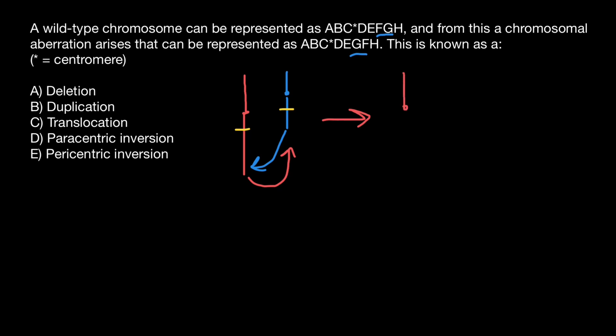what we can call reciprocal translocation. So now let's say this is chromosome number one, and this is chromosome number two. We will see that one chromosome would look as follows,